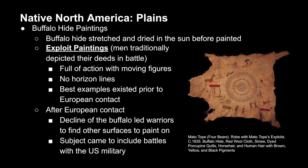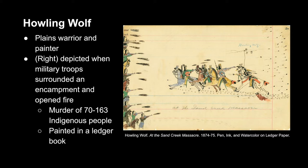Once European settlers came in the 19th century, there were two main reasons for a decline in this art form. First, there was a literal decline of buffalo, so there was much less hide to paint on, and artists had to seek out new canvases. Second, the subject matter shifted to include battles with the US military. For example, this painting by Howling Wolf was actually painted in a ledger book, which was one of the new canvases that became popular. The event depicted happened in 1864, during which military troops surrounded an encampment, opened fire, and murdered between 70 and 163 indigenous people. Howling Wolf signed this painting in the top right-hand corner by drawing a small wolf, and the text on it was put there by a collector, not the artist.